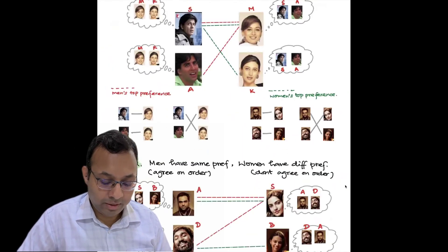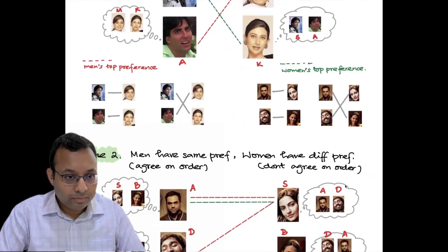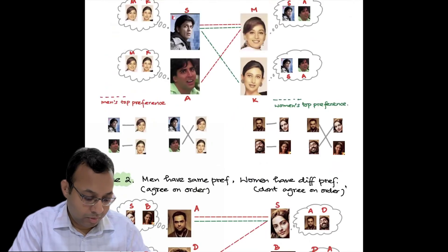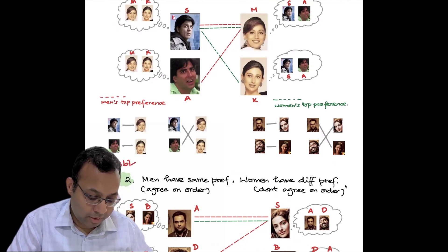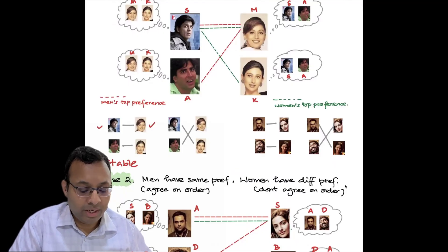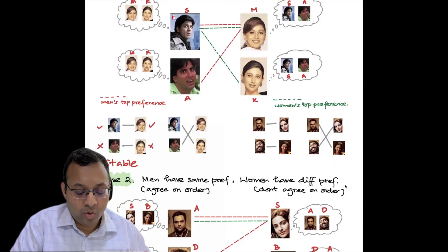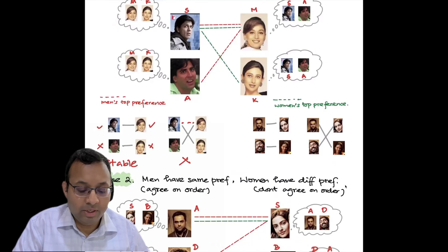Looking at the pairings: the first pairing is stable because both Shah Rukh and Madhuri are getting their top preferences — they will form a matching and the other two get the remaining edge. Shah Rukh and Madhuri are happy, and though the other two are not getting their top preference, it's still a stable matching because once a couple gets their top preferences with each other, there's no chance they will deviate. On the other hand, if we form the alternate pairing, that is not a stable matching — the instability will cause Shah Rukh and Madhuri to form an edge. So there is a unique stable matching in this case.